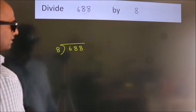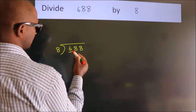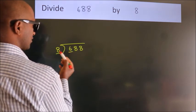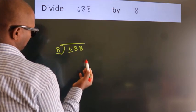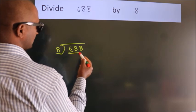Next, here we have 6, here 8. 6 is smaller than 8, so we should take two numbers, 68.